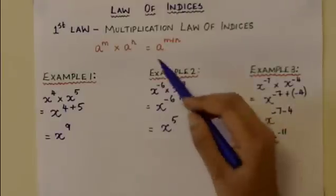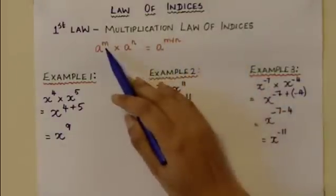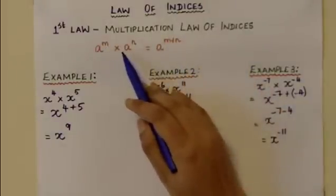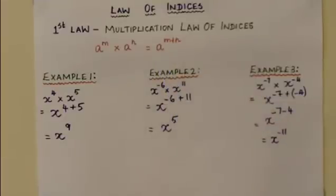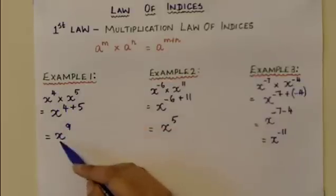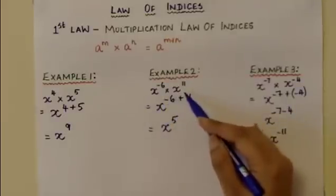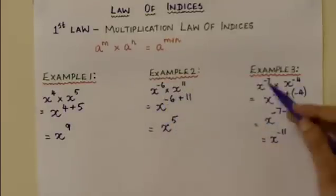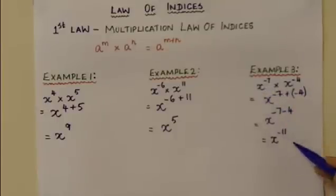Thus, according to the multiplication law of indices — a to the power of m times a to the power of n equals a to the power of m plus n — example 1: x to the power of 4 times x to the power of 5 becomes x to the power of 9; example 2: x to the power of minus 6 times x to the power of 11 becomes x to the power of 5; example 3: x to the power of minus 7 times x to the power of minus 4 becomes x to the power of minus 11.